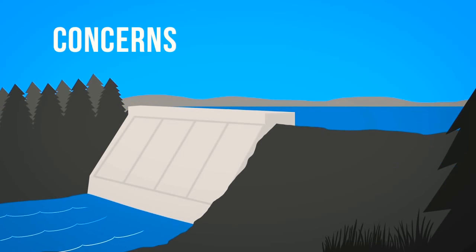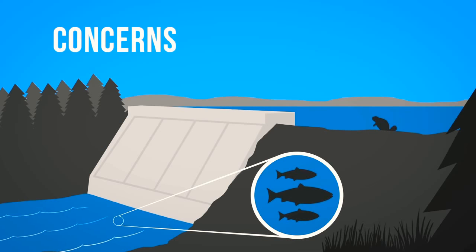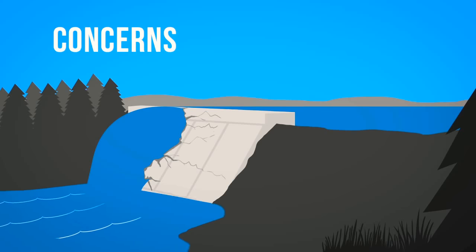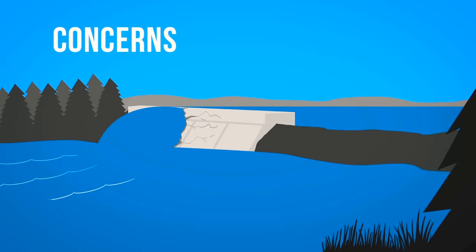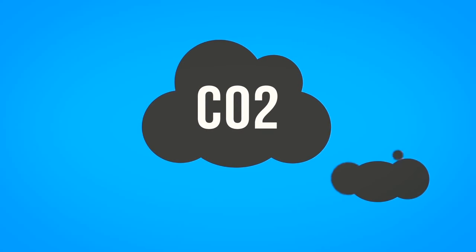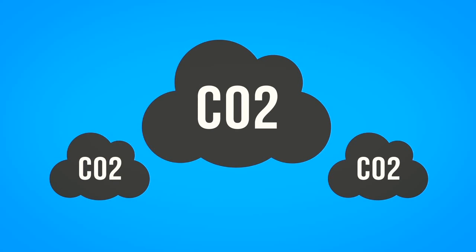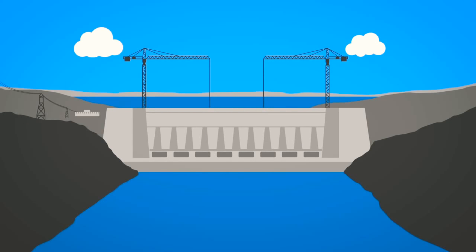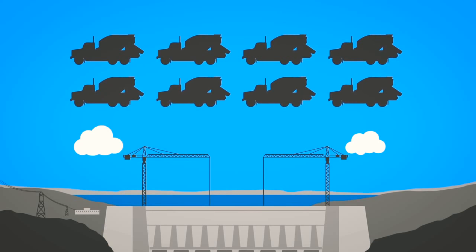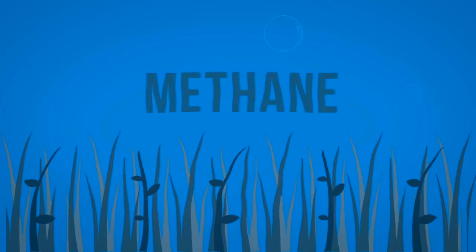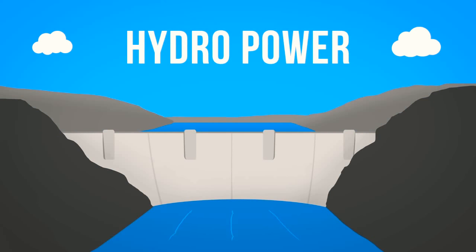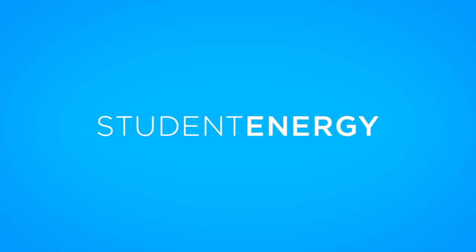There are also some concerns with hydropower, especially when it comes to large dams. Damming a river has a major impact on the local environment, changing wildlife habitats, blocking fish passage, and often forcing people in riverside communities to move out of their homes. In addition, dam failures can be catastrophic, claiming the lives of those living downstream. Hydro plants are also not completely free of greenhouse gas emissions. Carbon dioxide emissions happen during construction, particularly due to the large quantities of cement used, and plant matter in the flooded areas makes methane, another greenhouse gas, as it decays underwater. That's hydropower.